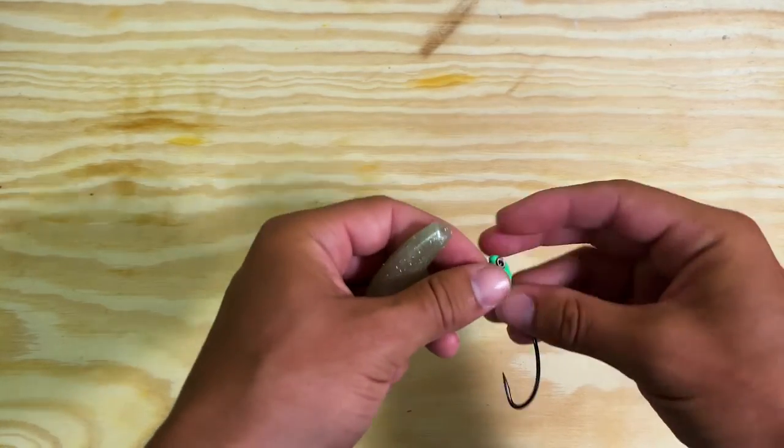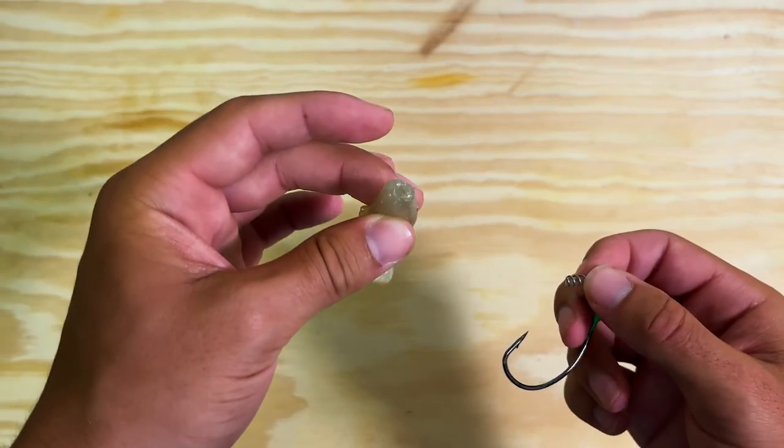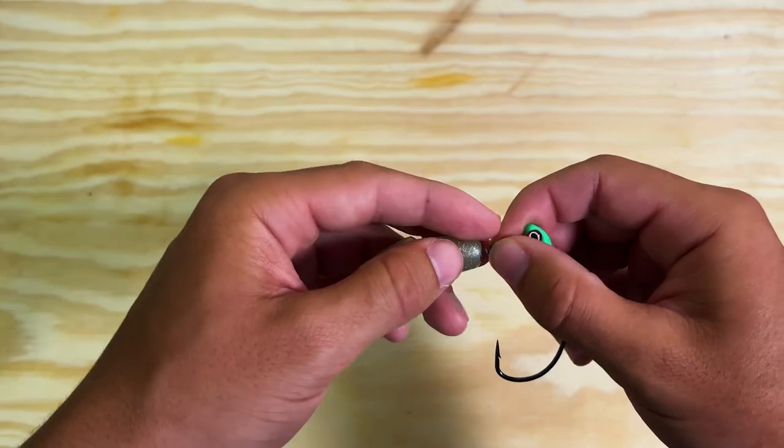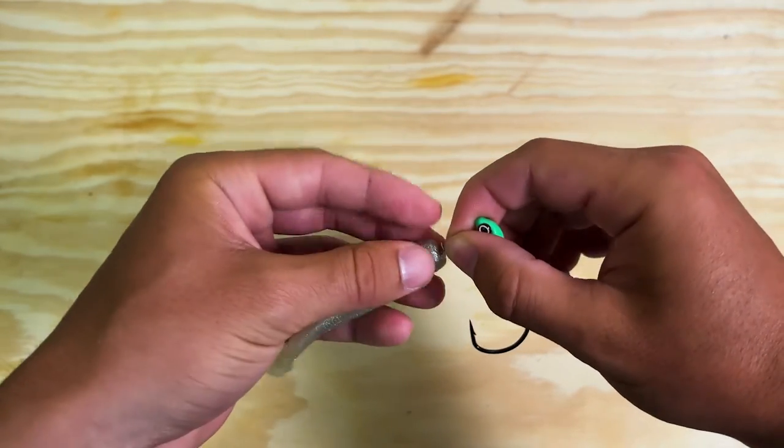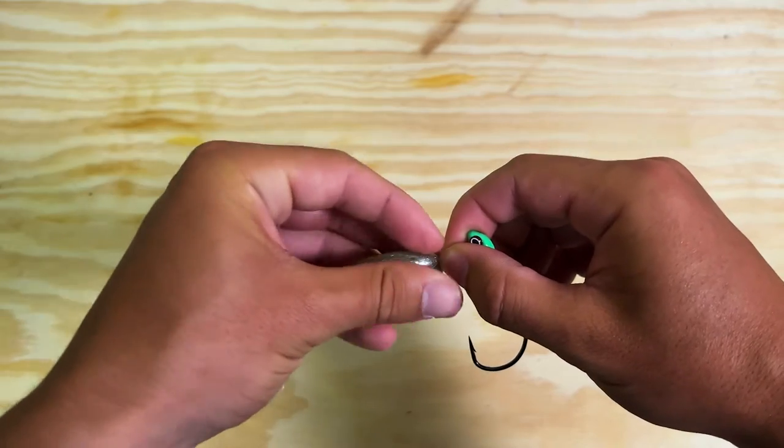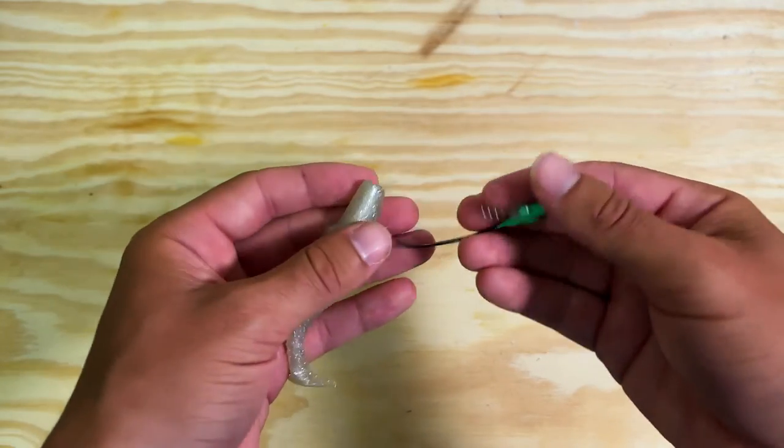So the issue that you typically have is because of the Elaztech it does not want to let that screw penetrate in and you'll be twisting it 70 million times and it still won't go in. So here's the trick.